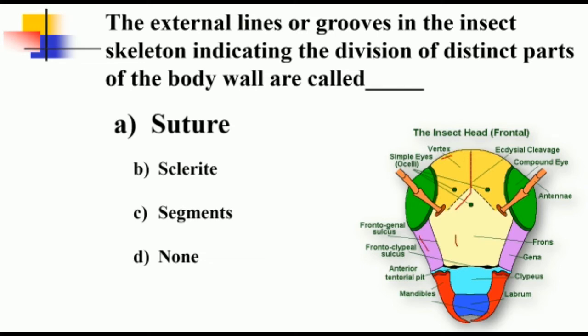The epicranial suture is present in the vertex region. Between gena and frons, the facial area of the insect, we have the frontogenal sutures. Between frons and clypeus there exists frontoclypeal suture, which is also known as epistomal suture. Between clypeus and labrum there is clypeolabral suture. Around the compound eyes we can see the ocular sutures, and around the antenna, antennal sutures are present to which antenna get attached.